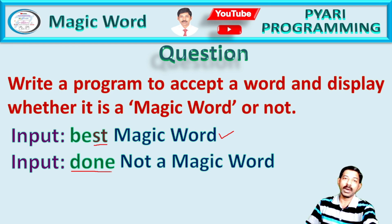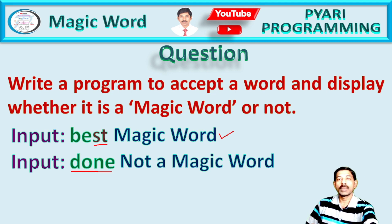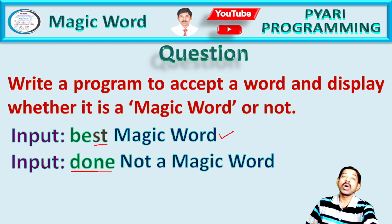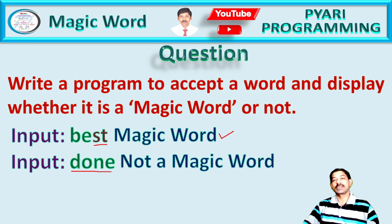For example, after 'e' comes 'f', after 's' comes 't', after 'a' comes 'b' — these are called consecutive characters.